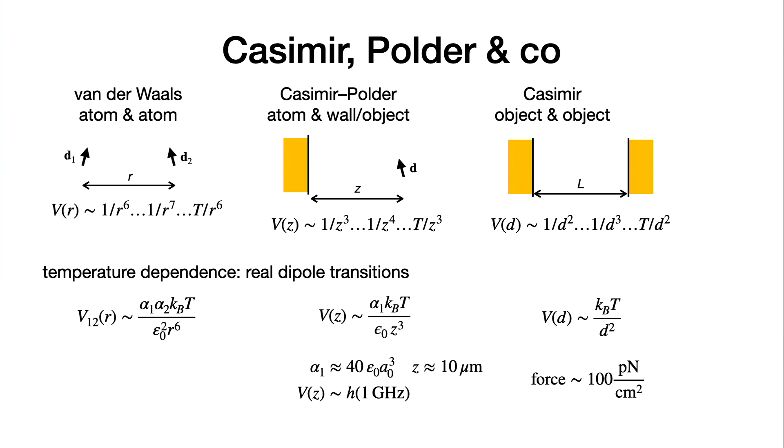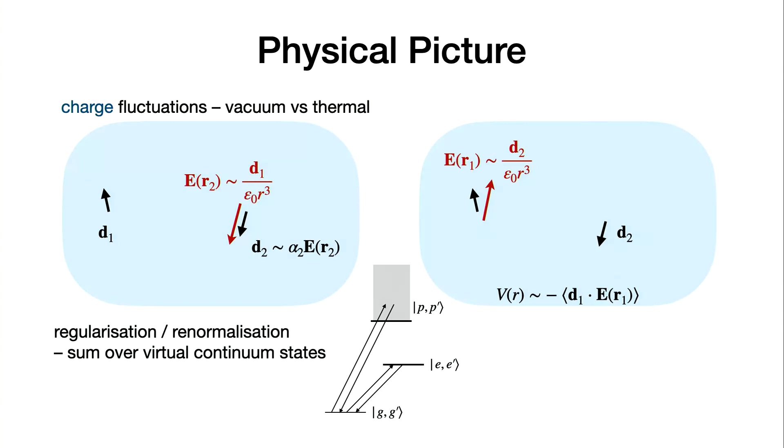For the Casimir force, this regime is again 1 over d squared. This constant here could sometimes be called the Hamaker constant. The typical force that you can derive is in this range here. If you have a square centimeter of area, this looks like not very difficult to measure with the AFM, but one centimeter is a huge object, in particular if you want to maintain it in parallel. Experimentalists will maybe address this challenge because it's really hard.